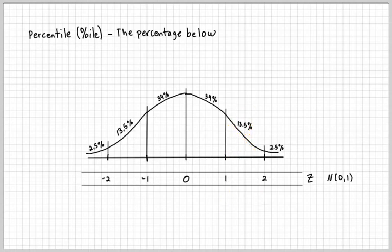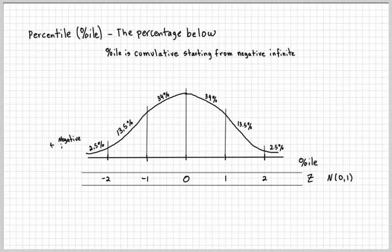Percentile is a cumulative process that starts from negative infinity, meaning you're counting the area under the curve from negative infinity. So you'll put the percentile values here underneath and next to these standard deviations, the spread of the data.